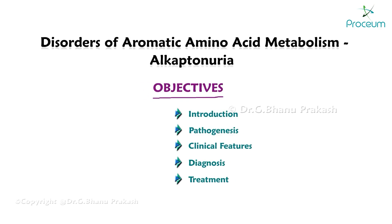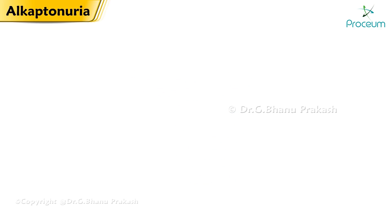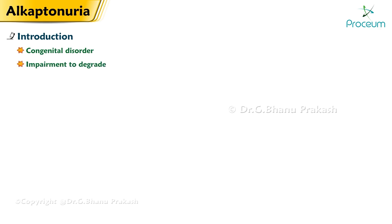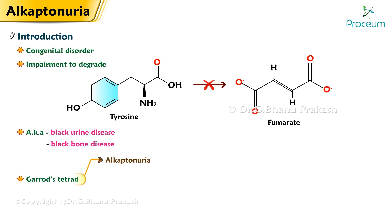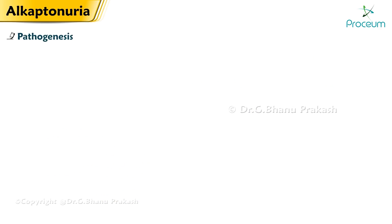Disorders of aromatic amino acid metabolism: Alkaptonuria — Introduction. It's a congenital disorder characterized by the impairment to degrade tyrosine. Alkaptonuria, also known as black urine disease or black bone disease, is part of Garrod's tetrad, which includes alkaptonuria along with cystinuria, albinism, and pentosuria.